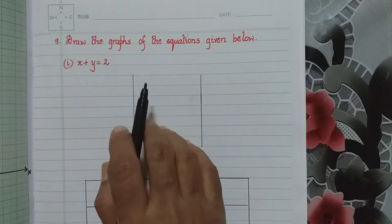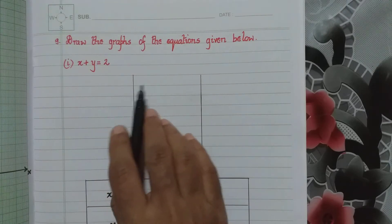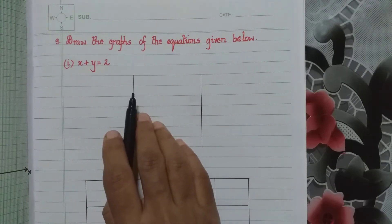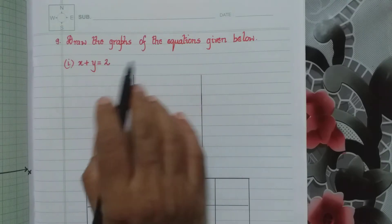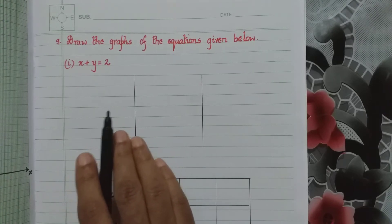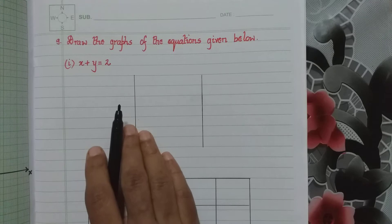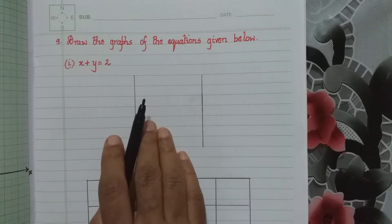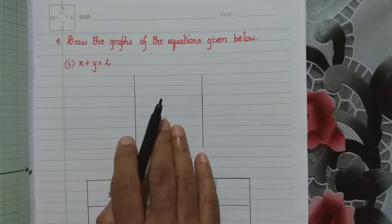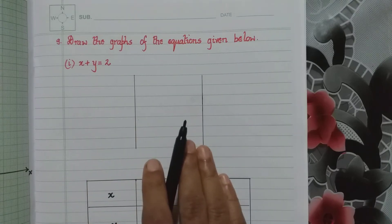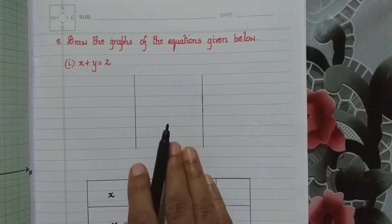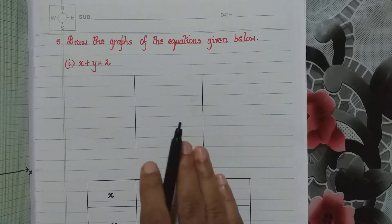The first equation given is x plus y equal to 2. Whenever we have to draw the graphs of a linear equation, we have to draw a line. To draw a line, we need points, and to have points on the line, we need their coordinates. So we have to find the coordinates of points. We take 3 points — although we require only 2 points to draw a line, we take 3 points so that we are sure the coordinates we have taken are correct.